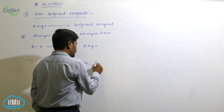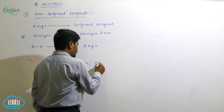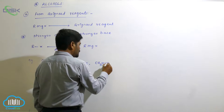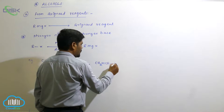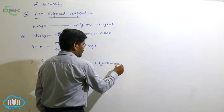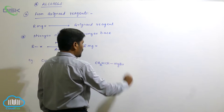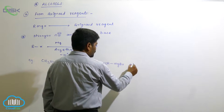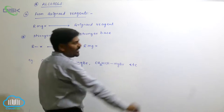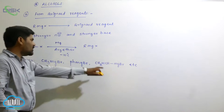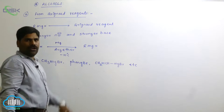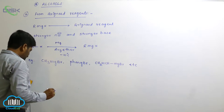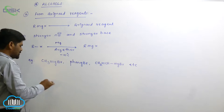Examples of Grignard reagents include methyl magnesium bromide, phenyl magnesium bromide, and vinyl magnesium bromide. These are all known as Grignard reagents.